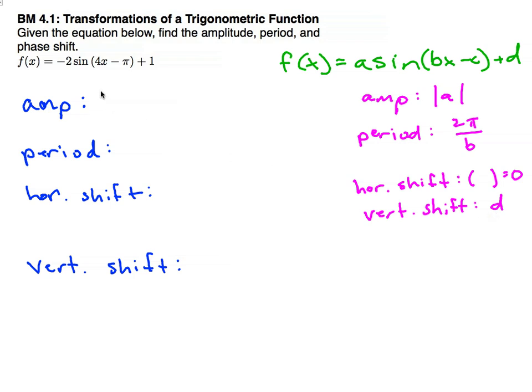All right, so we'll start off with the amplitude. It is the absolute value of negative 2, which is 2. So what that means is our sine function is being stretched twice as much as it normally is.